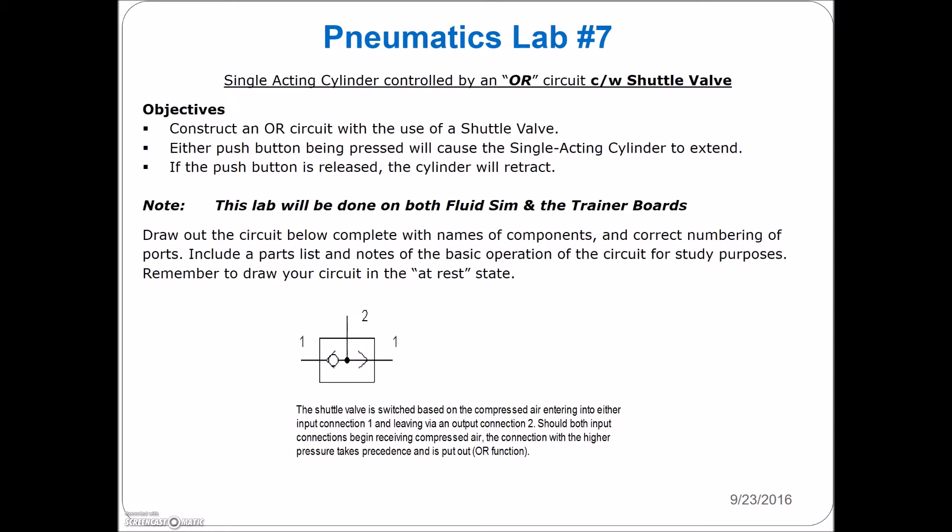You have everything set up on your board already. All you need to do is take the AND valve out, so take your two pressure valve off, replace it with this shuttle valve with the exact same inputs and the single output and you'll see that it goes from an AND circuit into an OR circuit.